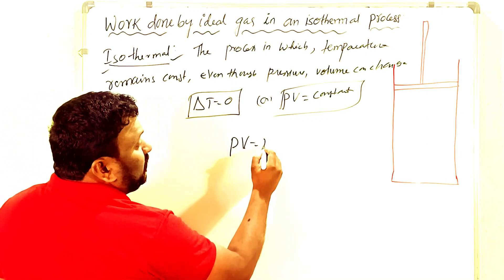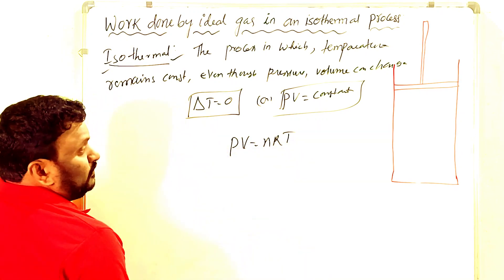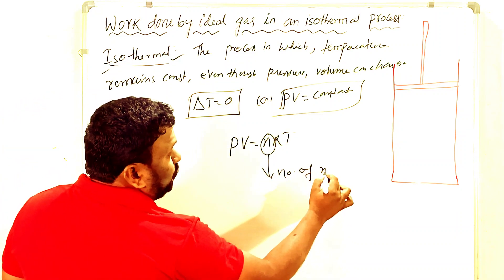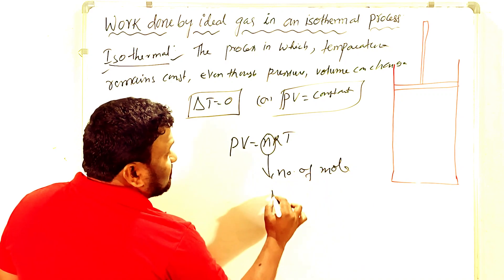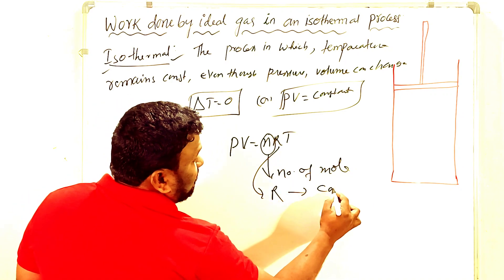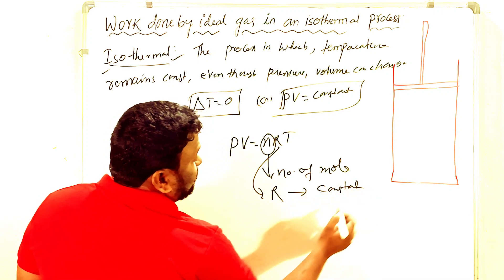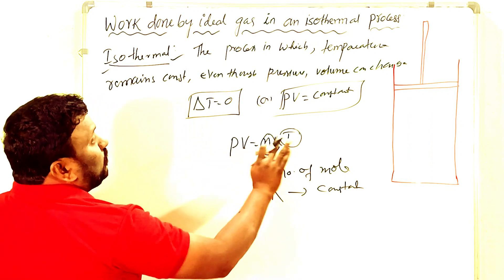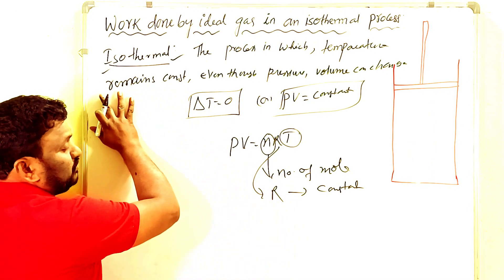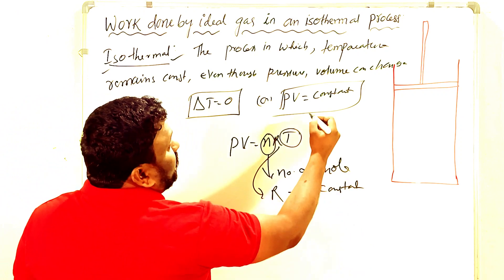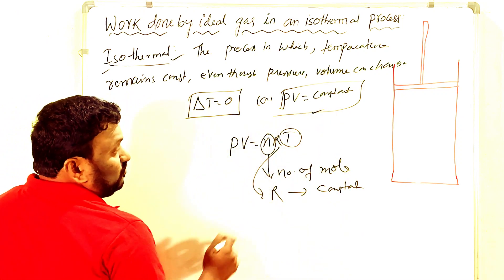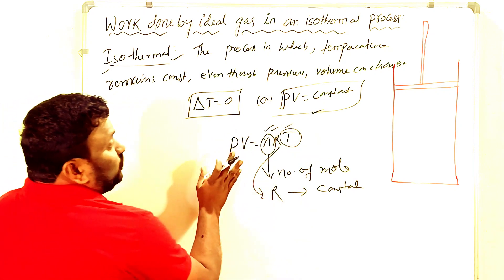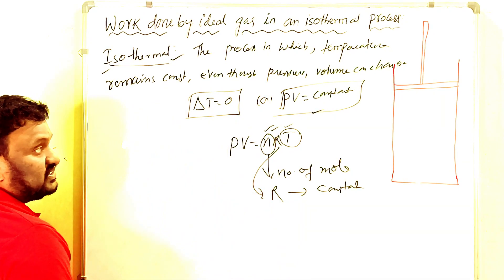In an isothermal process, at every instant of time the system must be in thermal equilibrium with the surroundings. From the ideal gas equation PV = NRT, here N is the number of moles and R is the universal gas constant. Since T is also constant in an isothermal process, and N and R are constants, PV equals constant.